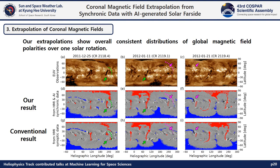Here we show another result in view of heliographic maps. There are two major magnetic flux emergences of the active regions, which are connected with open magnetic fluxes. Those active regions and open field areas are more consistent with our results than those of conventional methods, and our results show overall consistent distributions of global magnetic field polarities over one solar rotation.